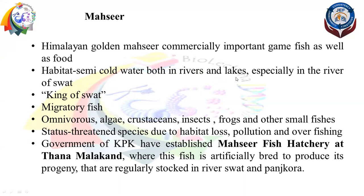Mahseer is also called the 'King of Swat' because of its presence in the rivers of Swat. It is a migratory fish, a game fish, and used as food. It is a large-sized fish and can bear harsh environments. Its breeding takes place over an extended period, and its lifespan is long. This fish is widely eaten in Pakistan and is very important.